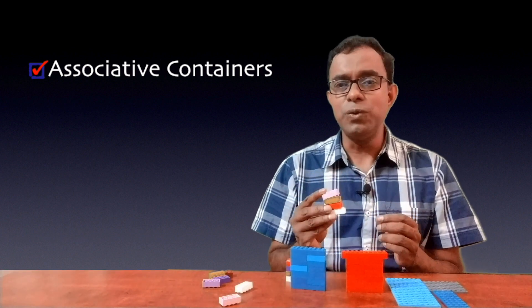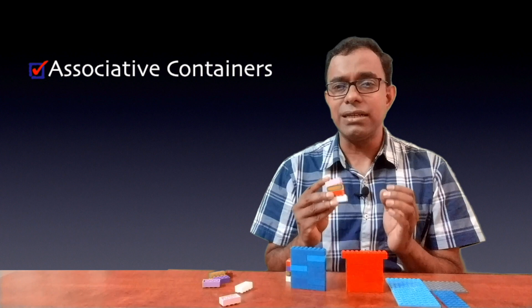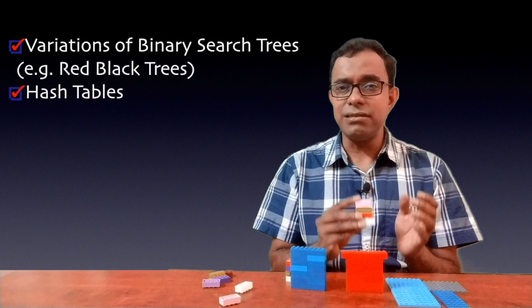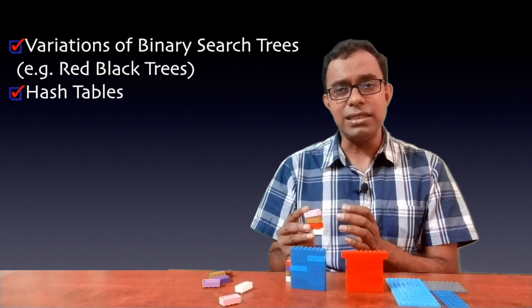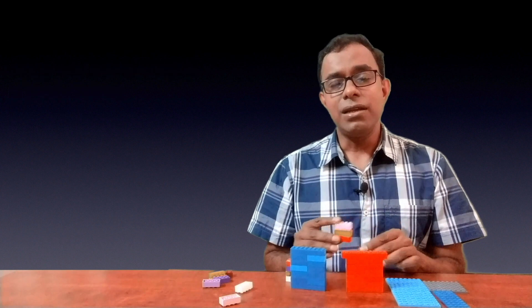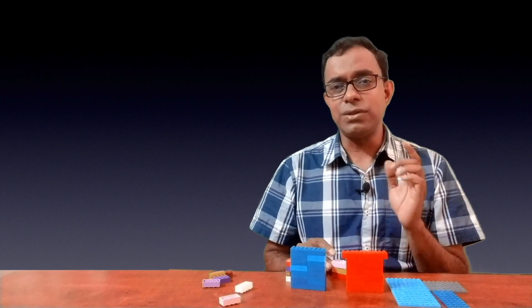Now the storage of data is determined by two ways because there are two major data structures being used in associative containers. One is binary search tree and the variations of it like red-black tree and another is the hash table.